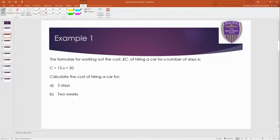First example then. Press pause please, copy this example down, and then press play when you're ready to go through the answers. The formula for working out the cost of hiring a car for n number of days is given as C equals 12n plus 50. It says calculate the cost of hiring a car for a, five days, and then b, two weeks.